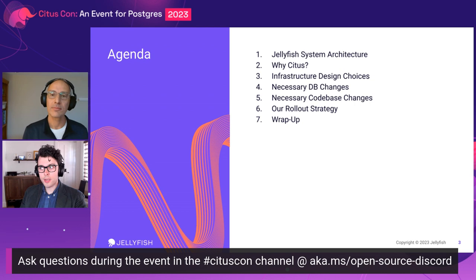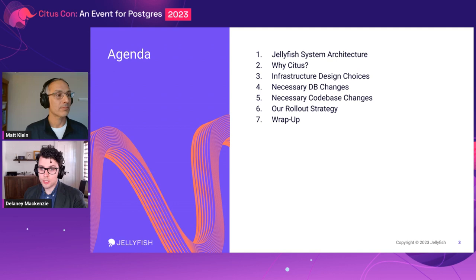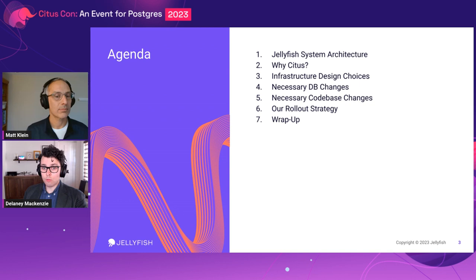So in terms of the agenda for today, we're going to do a little bit of time on our system architecture for context. Hopefully that will make it clear why for us a sharded solution, and specifically Citus, made sense. We'll talk explicitly about why we chose Citus. Then we'll dig into some of the design choices for our infrastructure, things we needed to change about our database and schema, and our code base. And also our rollout strategy — this was actually a big gotcha that we kind of expected to be a non-issue going in.